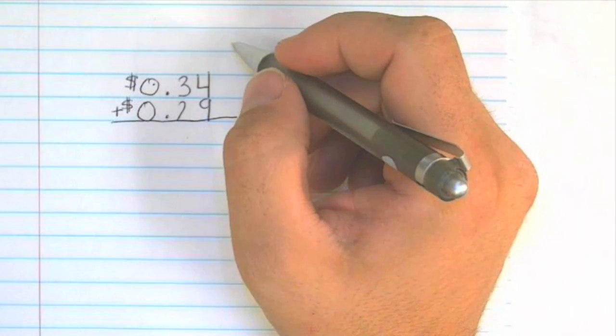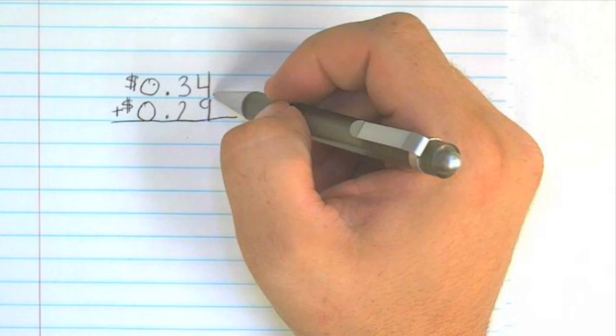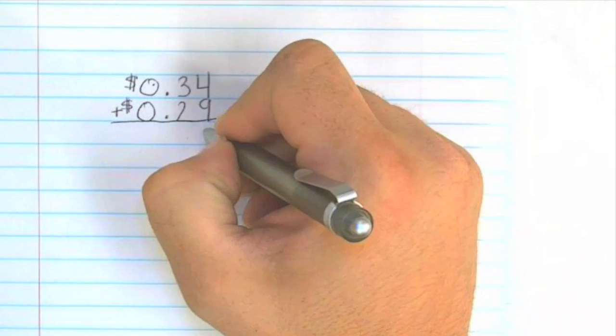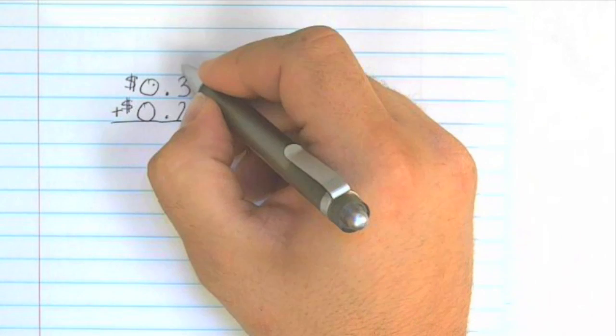So other than that, we'll add it like the other problems, starting in the ones column. 4 plus 9 is 13, so we'll put down the 3, carry the 1.